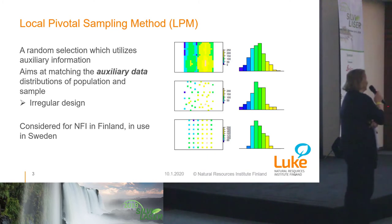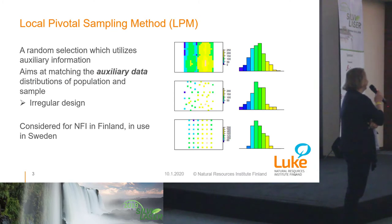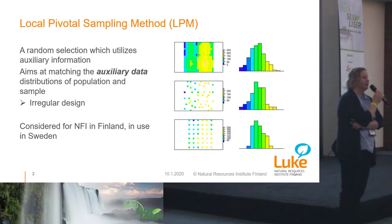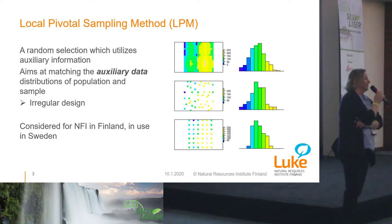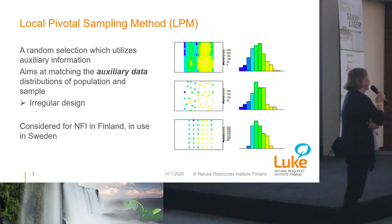But there is, of course, one consequence. If you use auxiliary data, you will get an irregular sample — it's no longer systematic with respect to geographic coordinates. This method is already in use in Sweden and in the consideration stage in Finland.